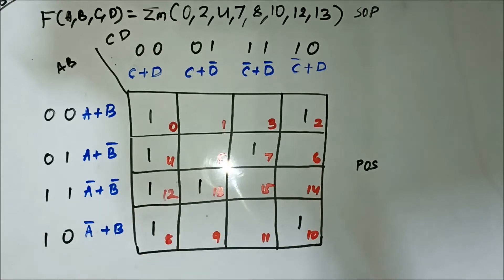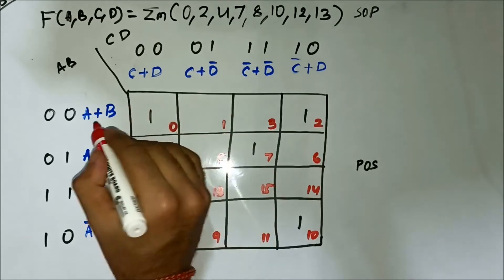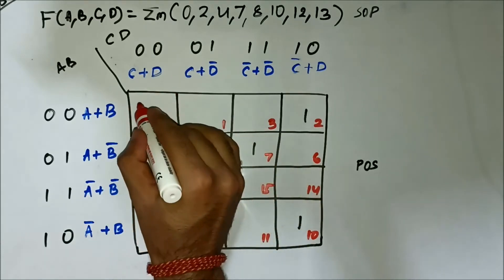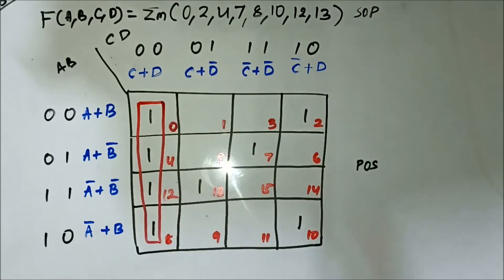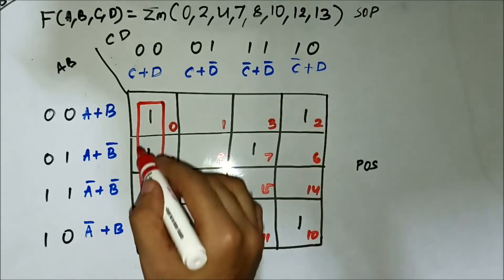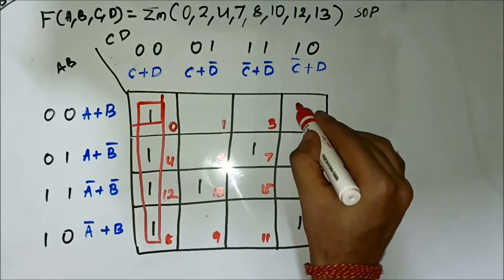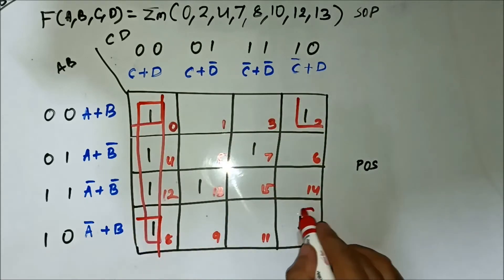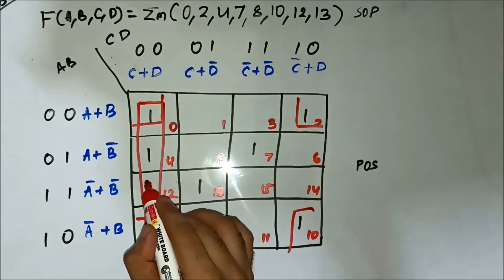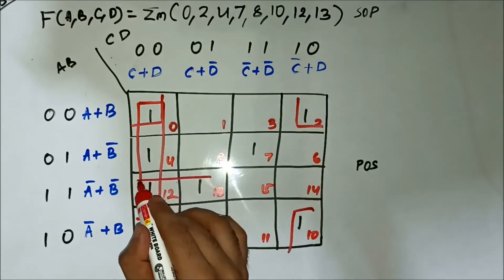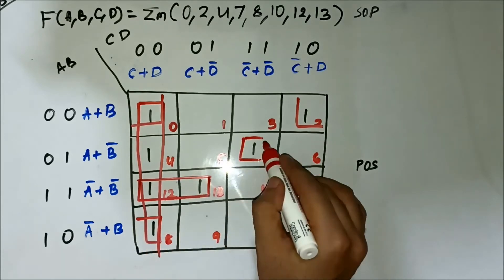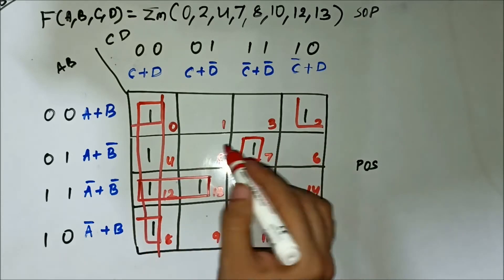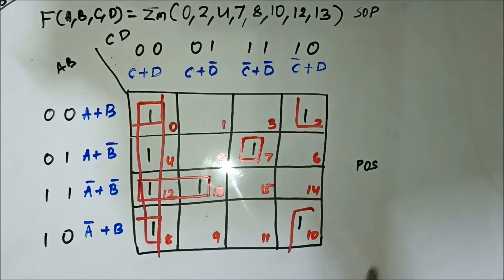Now we will form groups. Here we can form one quad. Then these corner cells, we can form a quad. Then this can be a pair. And this is a single cell group because there is no vertically or horizontally adjacent filled cell.